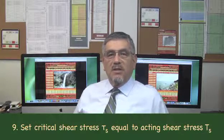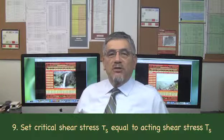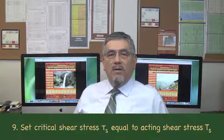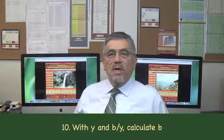Step 9: Set the critical shear stress tau sub S equal to acting shear stress T sub S and solve for flow depth Y. Step 10: With Y and B over Y, calculate B.